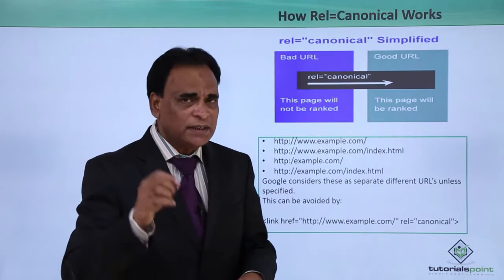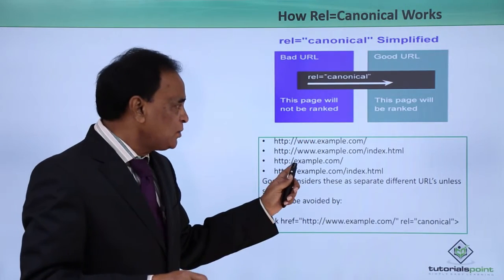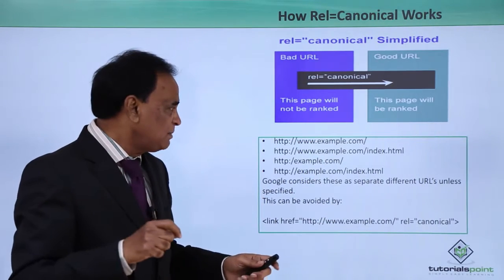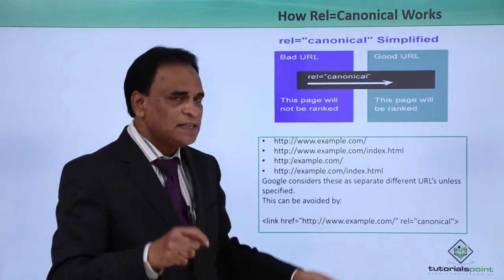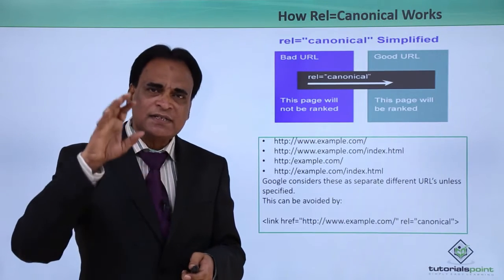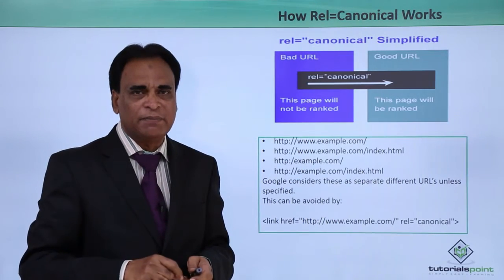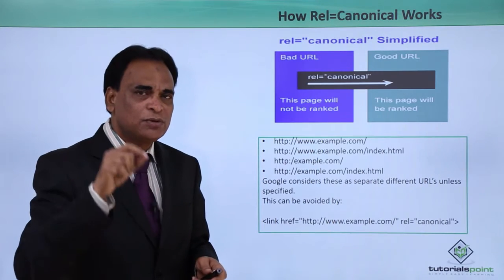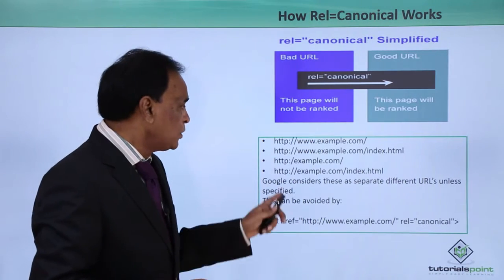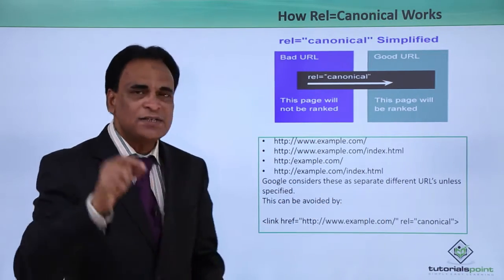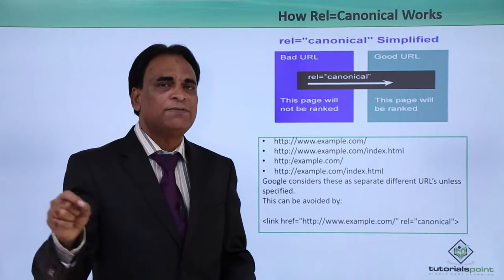How does the Canonical Tag actually work? Consider this example. There is a site called example.com, a separate URL example.com/index.html, another example http://example.com, and http://example.com/index.html. These are precisely one website — not different websites. But the URLs are different for the same domain name. When Google starts indexing, it treats these four URLs as different URLs unless you specify to Google clearly that they are actually one particular URL.